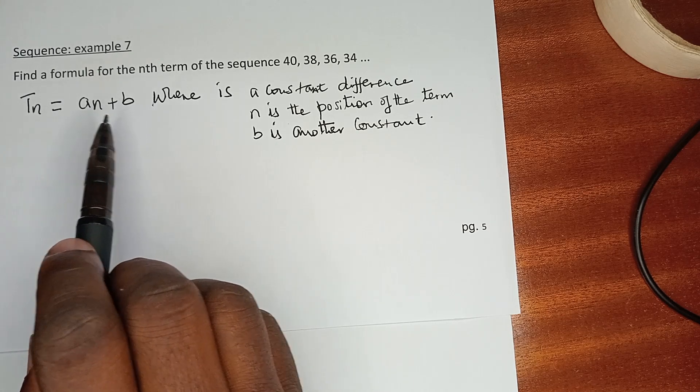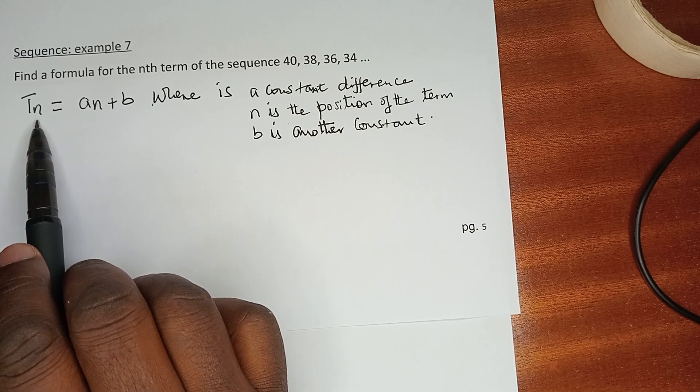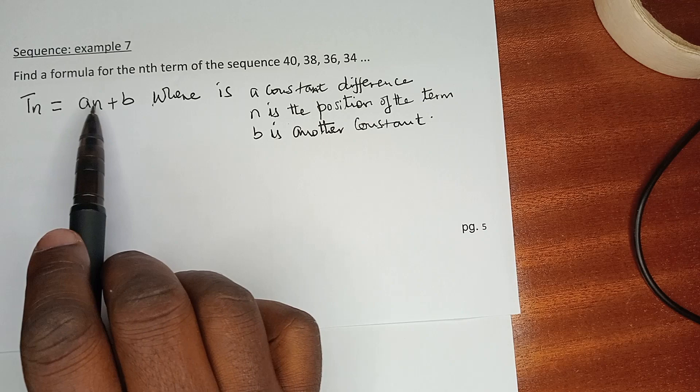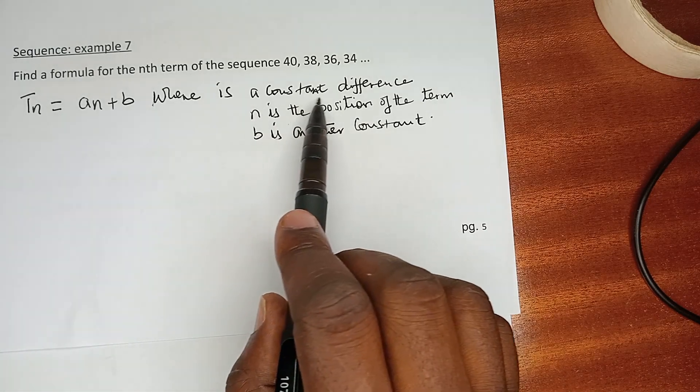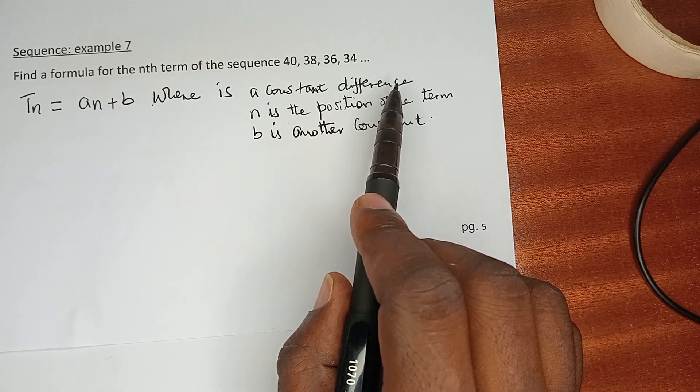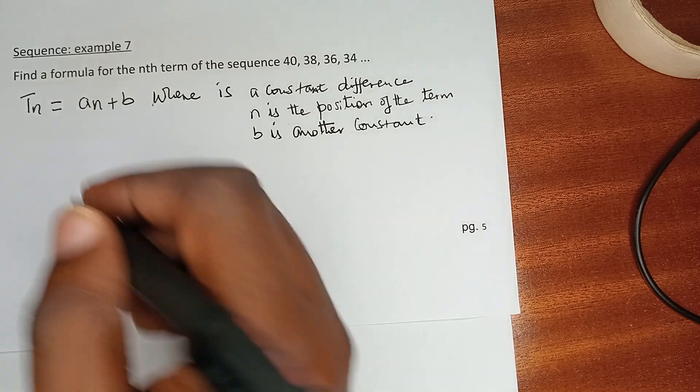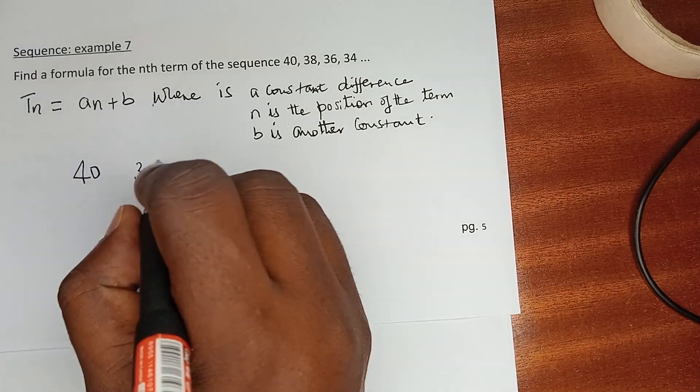a constant difference—it's actually the constant difference in the first row. For example, we have 40, we have 38, we have 36, and we have 34. The common difference here is